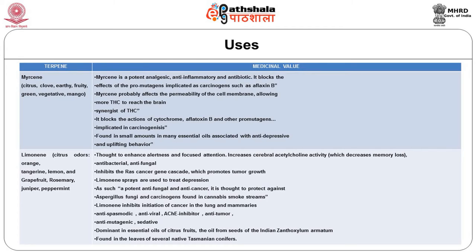Myrcene affects the permeability of the cell membrane, allowing more THC to reach the brain — acting as a synergist of THC. It blocks the actions of cytochrome-activated aflatoxin B and other promutagens implicated in carcinogenesis, found in small amounts in many essential oils. It is also associated with antidepressive and uplifting effects, and has been widely studied.